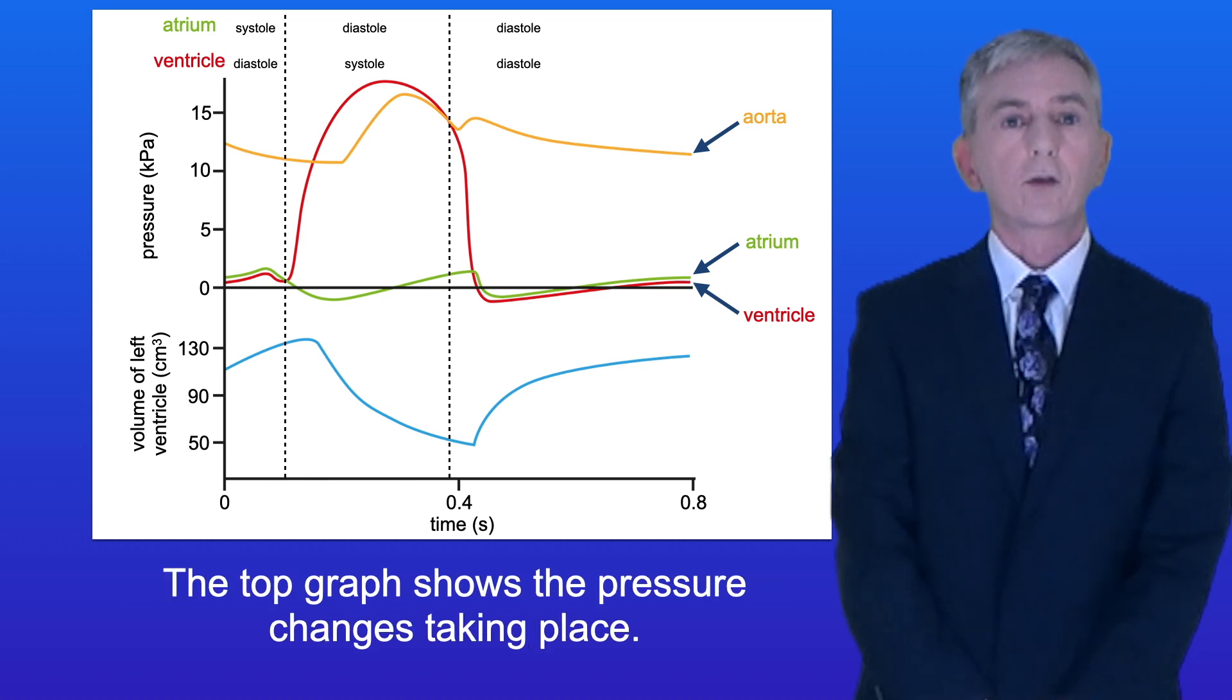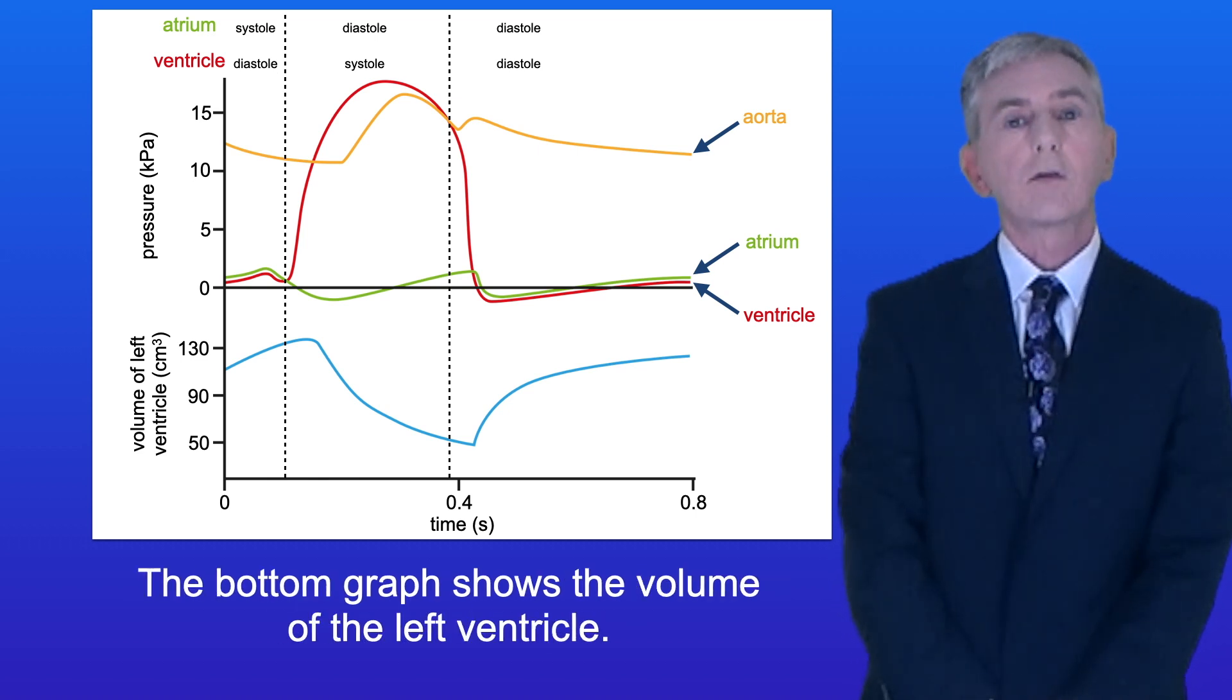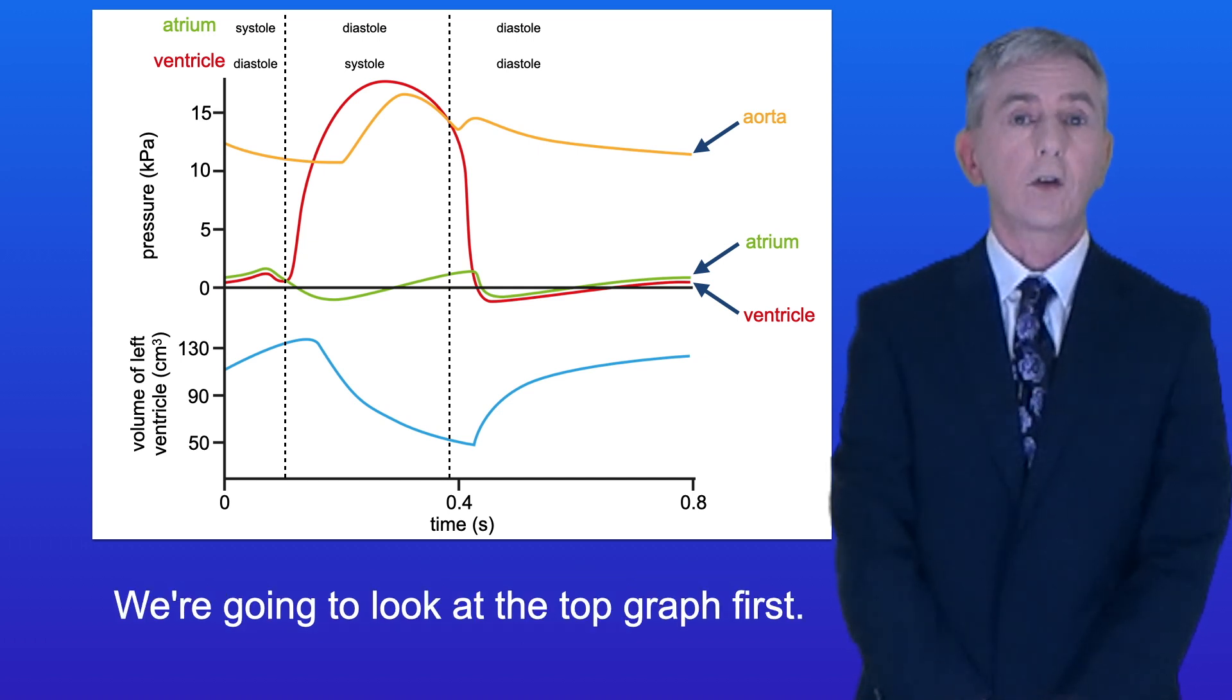The top graph shows the pressure changes taking place and the bottom graph shows the volume of the left ventricle. We're going to look at the top graph first.